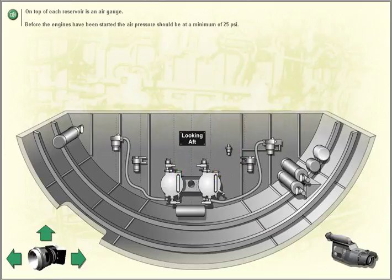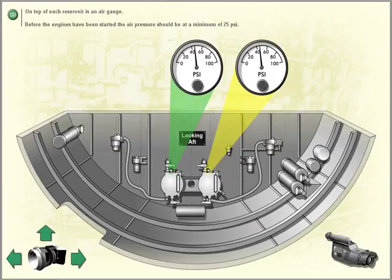On top of each reservoir is an air gauge. Before the engines have been started, the air pressure should be at a minimum of 25 PSI.